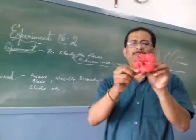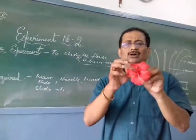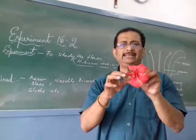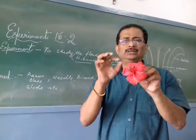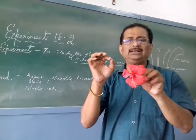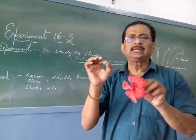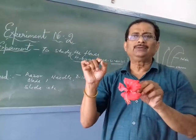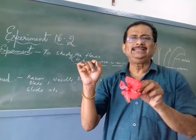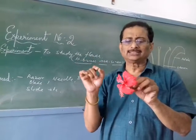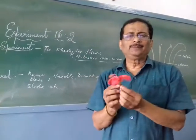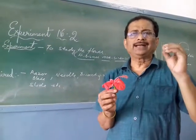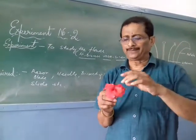We have five petals, all red in color, but all are free. If the petals are free, we call it polypetalous — P-O-L-Y-P-E-T-A-L-O-U-S. These are the terms you have to know when we describe the flower.